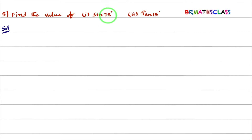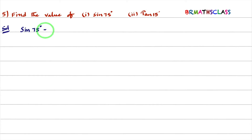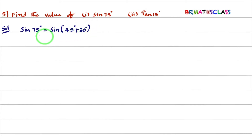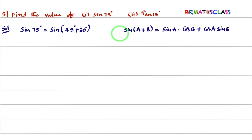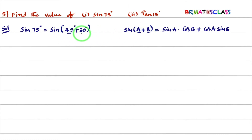Find the value of sin 75°. This value is not in the trigonometry table, so we calculate it. 75° can be written as 45° + 30°. This looks like sin(A + B). The formula is sin A·cos B + cos A·sin B. Here A = 45° and B = 30°.